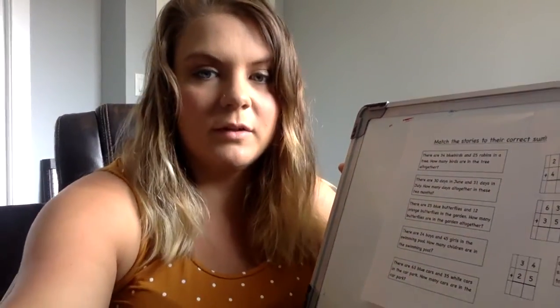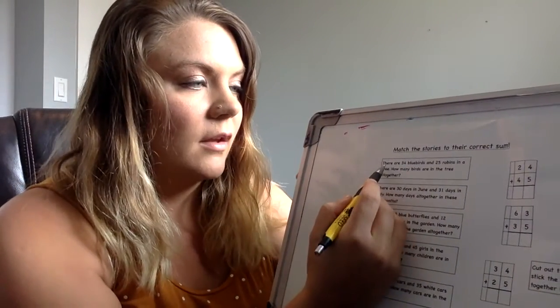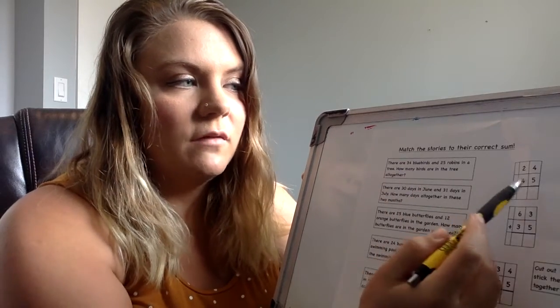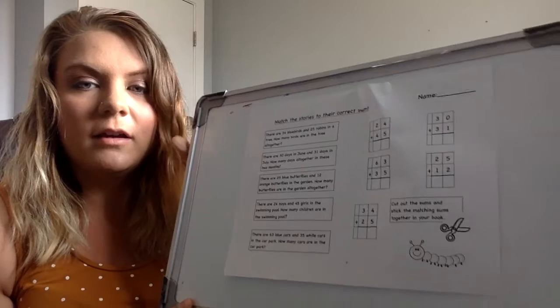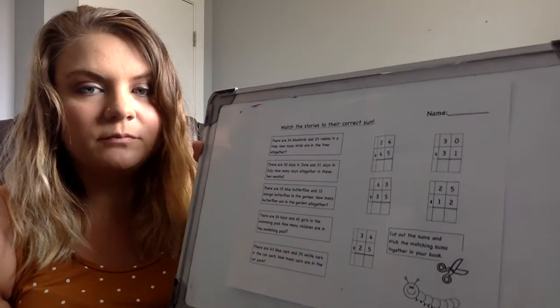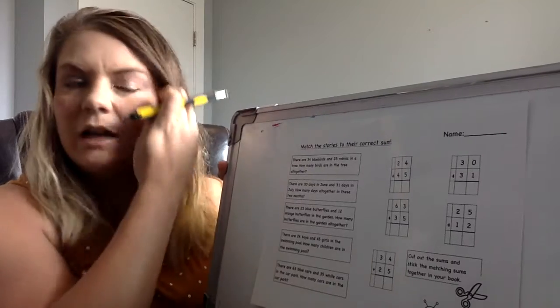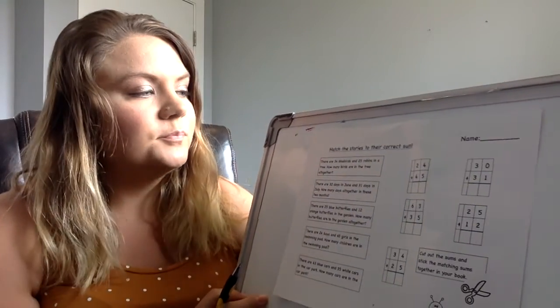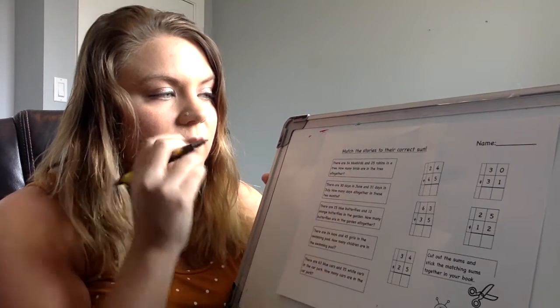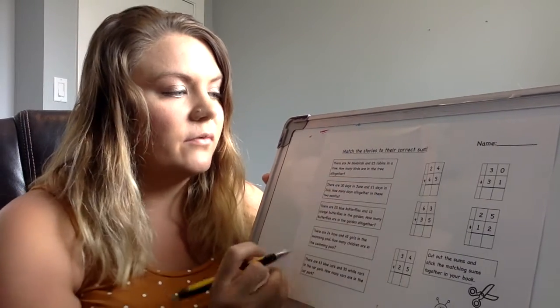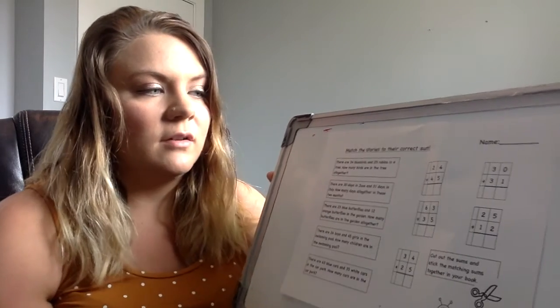So let's read this one together here. So the first one, what you're doing here is you're reading the question and then you're finding what word question goes with that one. You can cut them out and paste them together if you want, or you can draw lines, whatever you'd like. So the first one says there are 34 bluebirds and 25 robins in a tree. How many birds are in the tree altogether?